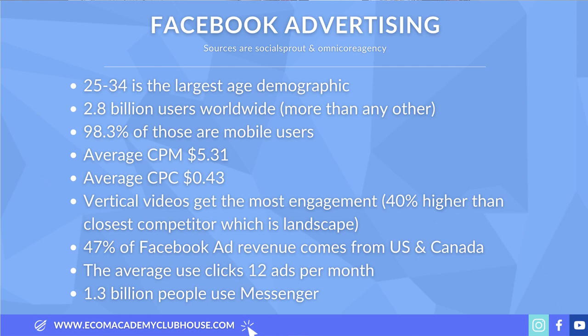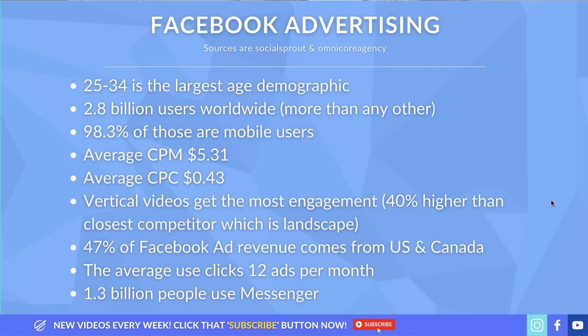The average CPC according to Sprout Social is 43 cents, though in e-commerce trying to get somebody interested in a physical product is a bit more expensive — around about a pound. Vertical videos get the most engagement, in fact 40% higher than the closest competitor which is landscape video. This is because the majority of users are on a mobile device, so vertical videos take up more space on their screen.